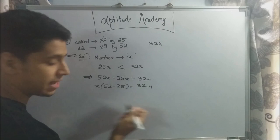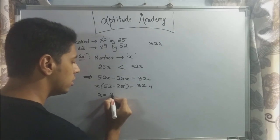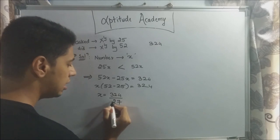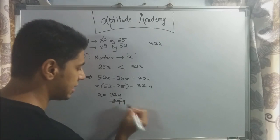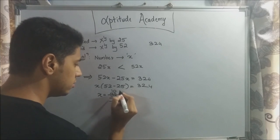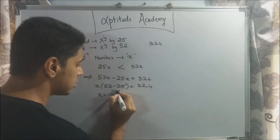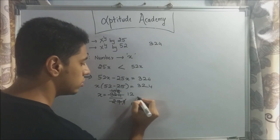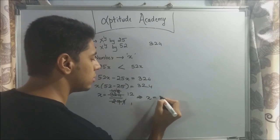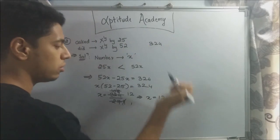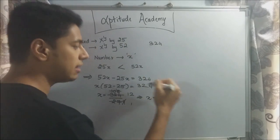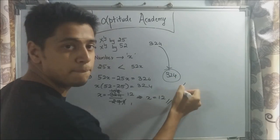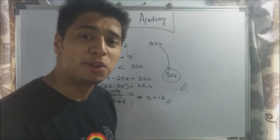Now, 52 minus 25 is 27. So x is equal to 324 by 27. 3 nines are 27, 3 ones are 0, 6, sorry, 8. 9 ones are 2. So the answer x is equal to 12. Now, you can verify it by multiplying it into 25 and 52 and see that the difference will be 324. Easy, right? Let's go on to problem number 3.